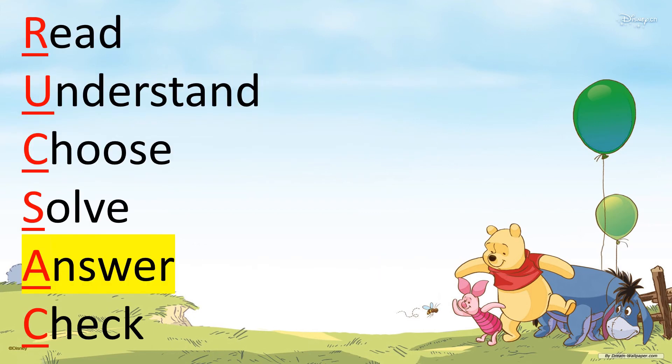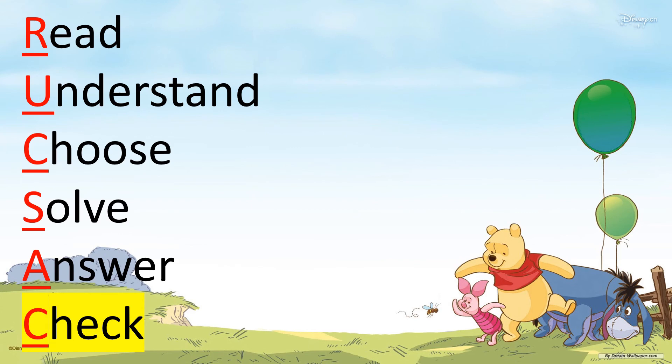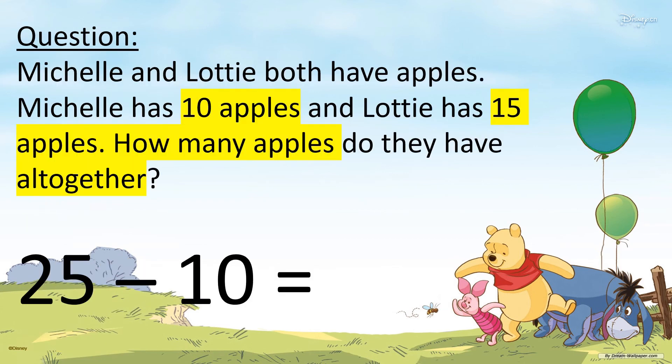We need to Answer the question. Michelle and Lottie both have apples. Michelle has 10 apples and Lottie has 15 apples. How many apples do they have all together? They have 25 apples all together. And last, most importantly, we have to Check. We do the inverse: 25 minus 10 gives us 15. That means the answer to the question is 25.